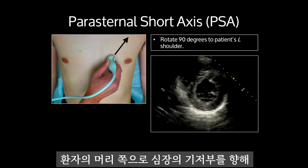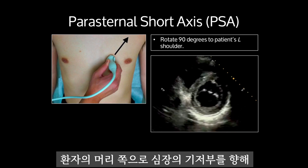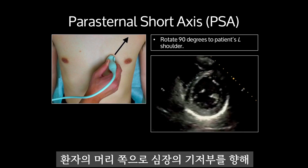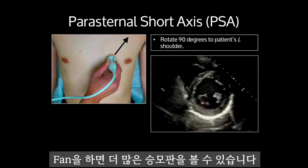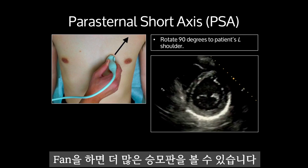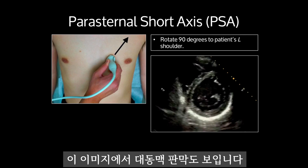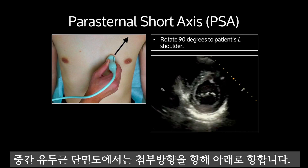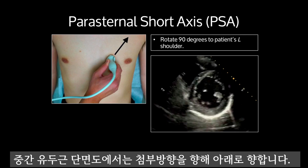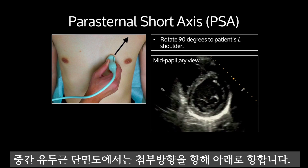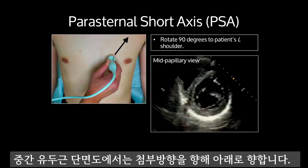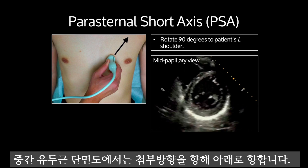Fanning up towards the base of the heart to the patient's head will get you more of the mitral valve, even the aortic valve in view. In this image, we are more inferior or towards the apex in the mid-papillary view.